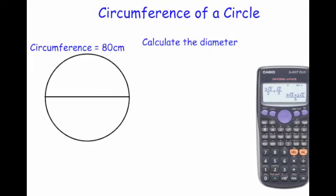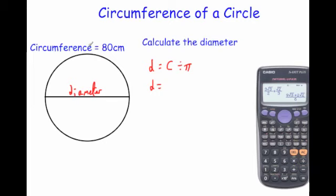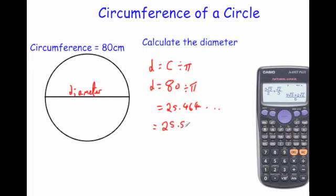This time we've been given a circle where the circumference is 80 centimetres and we need to find the diameter. To get the circumference you do pi times diameter, so to get the diameter you divide by pi — the diameter equals circumference divided by pi. So the diameter equals 80 divided by pi, which gives 25.464, rounding to 25.5 centimetres to one decimal place. If you want the circumference you do pi times diameter; if you need the diameter you do circumference divided by pi.